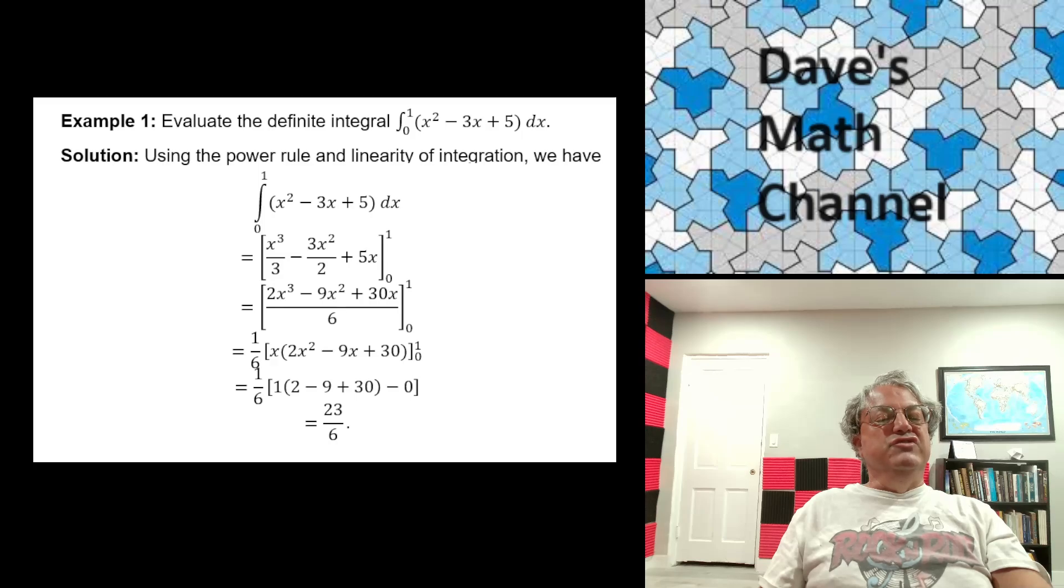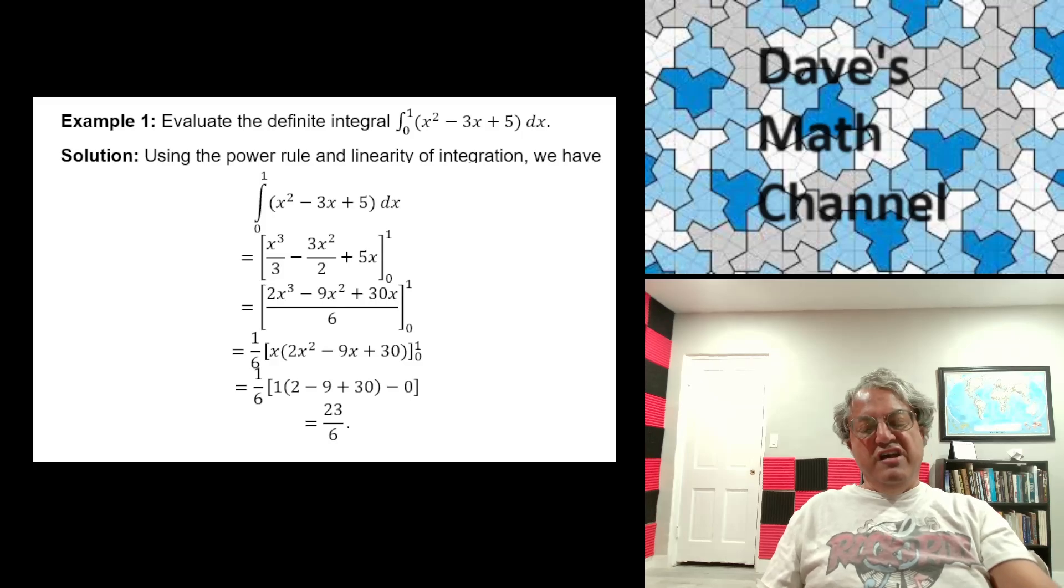And we're evaluating that between x equals 0 and x equals 1. Let's first evaluate it at x equals 1. So when you do that, you get 1 times 2 minus 9 plus 30. That's what you get for the upper limit. And plugging in x equals 0 gives you 0 for the whole thing. So when you're done simplifying this, you get 23 over 6. Anyway, that's how you do that.